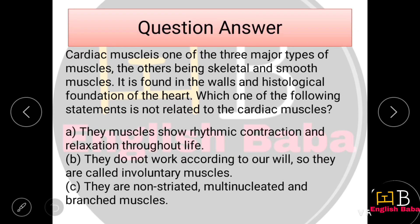Cardiac muscle is one of three major types of muscles, the others being skeletal and smooth muscles. Which of the following statements is not related to cardiac muscles? The incorrect statement is Option C: they are non-striated, multi-nucleated and branched muscles.